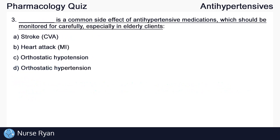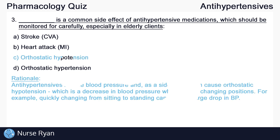Moving on to question number three: blank is a common side effect of antihypertensive medications which should be monitored for carefully, especially in elderly clients. The answer here is C — orthostatic hypotension. Antihypertensives reduce blood pressure and, as a side effect, can cause orthostatic hypotension, which is a decrease in blood pressure when rapidly changing positions. For example, quickly changing from sitting to standing can cause a large drop in blood pressure.